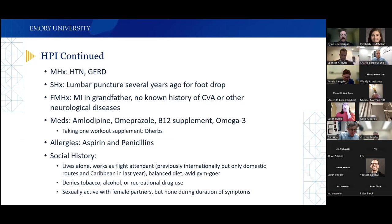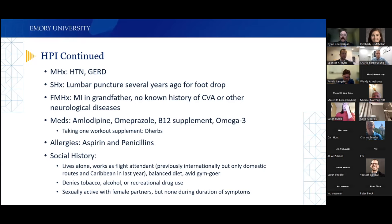His medical history was notable for hypertension and GERD. Surgical history included a lumbar puncture several years prior for foot drop, but symptoms resolved without intervention and he was never given a diagnosis. Family history was notable only for MI in his grandfather, with no known neurological diseases. He was taking amlodipine, omeprazole, a B12 supplement, omega-3, and a workout supplement, with allergies to aspirin and penicillin. He lived alone, worked as a flight attendant doing domestic and Caribbean routes, was an avid gym-goer, denied tobacco, alcohol, or recreational drug use, and was sexually active with female partners.